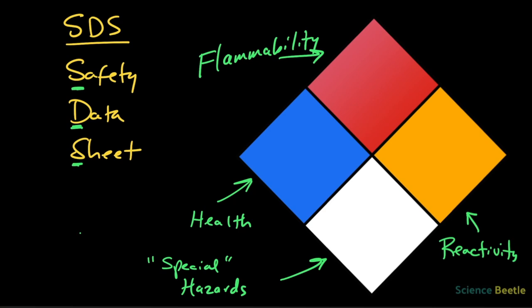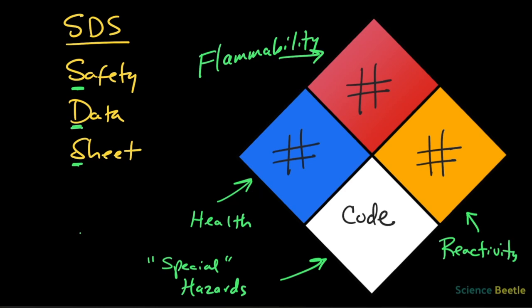What's unique about these four sections is how you distinguish them. For the health hazard, flammability, and reactivity, each is associated with a number — a rating of zero to four. Whereas for special hazards, there is no number. Instead, what we have is a code associated with it, and those codes can be a variety of things.